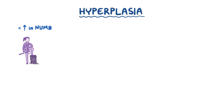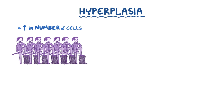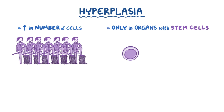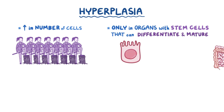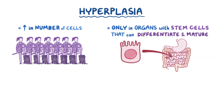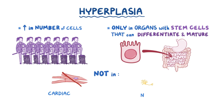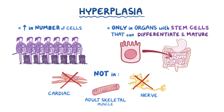In hyperplasia, there's an increase in the number of cells — a larger pack — and that can only happen in organs with stem cells that can undergo cellular differentiation to become a mature cell in that organ, like cells in the intestines for example. So hyperplasia does not happen in relatively permanent tissues without stem cells, like cardiac, nerve, and adult skeletal muscle tissue.